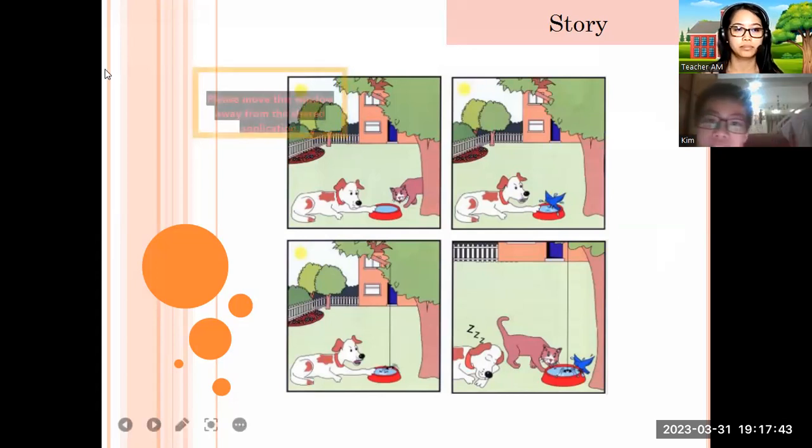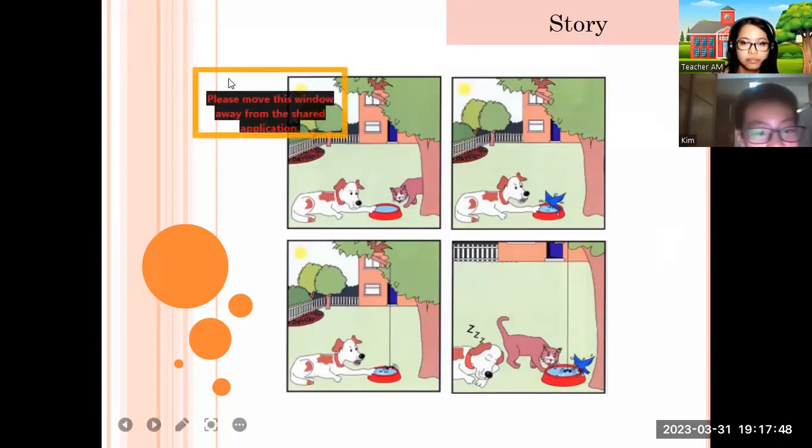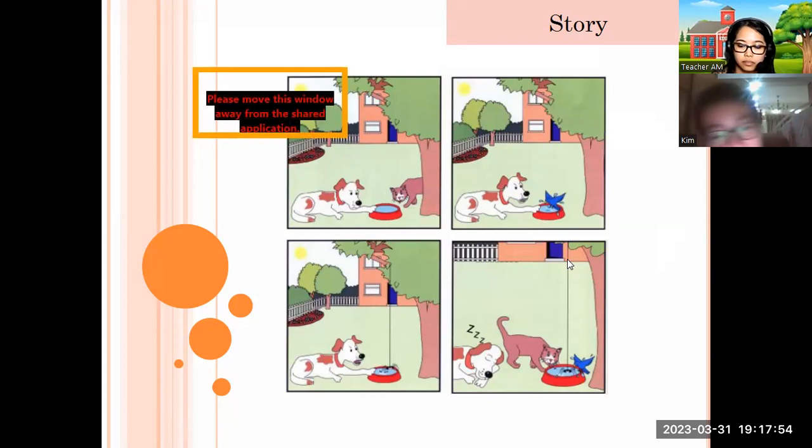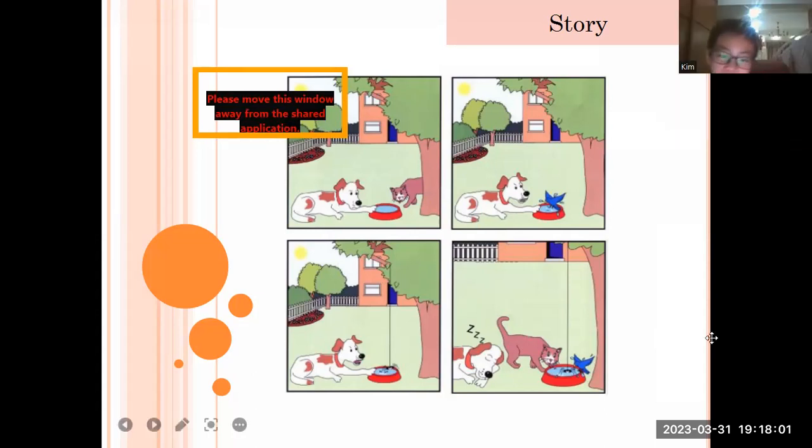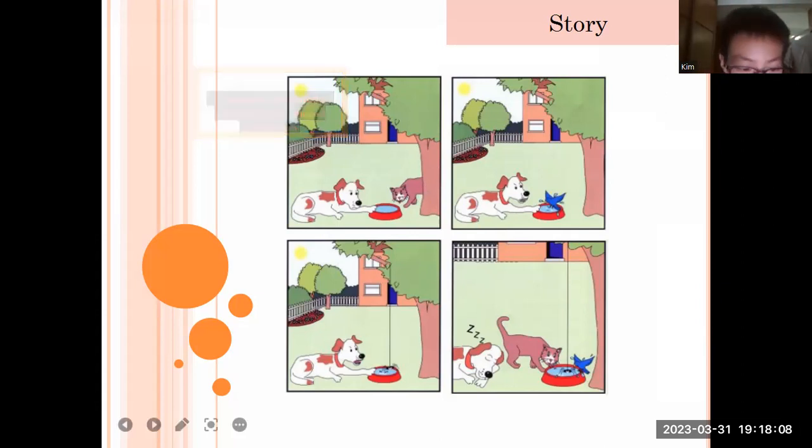Picture three, the dog want to drink water, but the spider go on the boat and drink water. The dog is very angry. Picture four, the dog is sleeping. The cat's spider bird are drinking water. Very good, Kim.